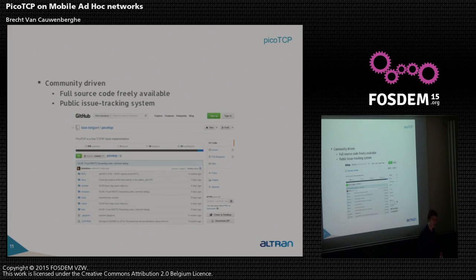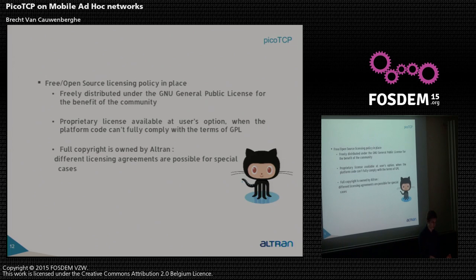The code is publicly available on GitHub at TOS Belgium slash Pico-TCP, where you can ask questions. The source is open and uses a dual licensing policy: GPL version 2 and a proprietary license for companies that don't want to be bound to the GPL terms.